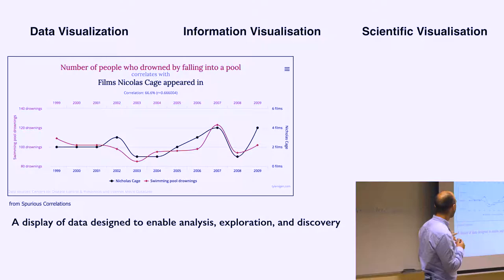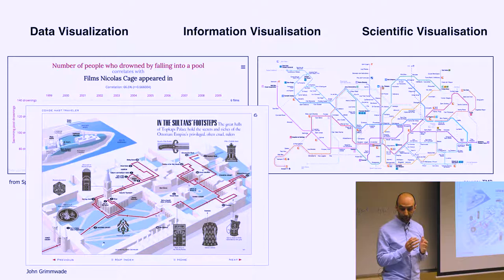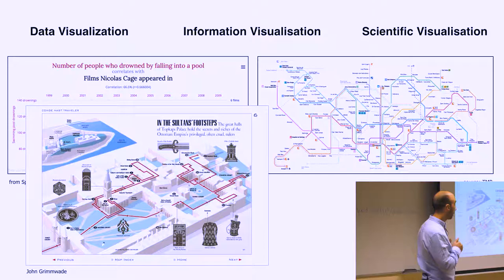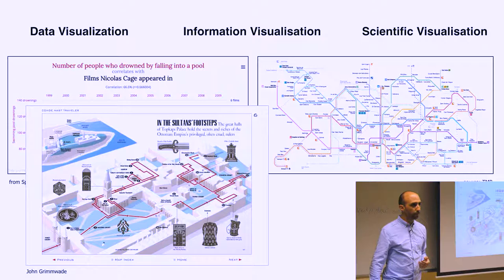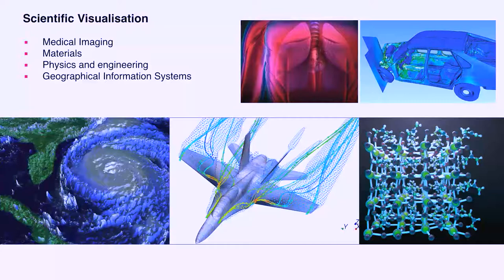The information visualization can refer to other types of visual representations, not just quantitative, like a metro map, or this layout of the Topkapi temple in Istanbul. So they are also visual representations of information, but not quantitative in this case. And the third type is the scientific visualizations, which are basically visualizations of scientific data, which you can have from a variety of domains, like medical, material science, physics, engineering, geographical information systems, and so on.